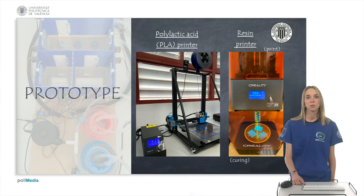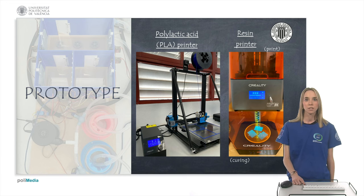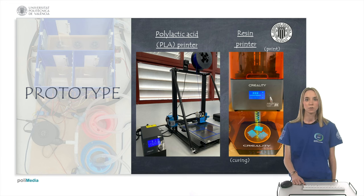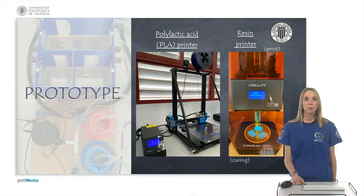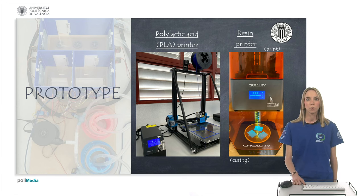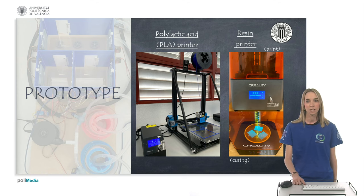To print many of the necessary parts, two printers were used: the polylactic acid PLA printer and the resin printer. The PLA printer is used to obtain large and more durable parts, while the resin printer provides a more precise finish.